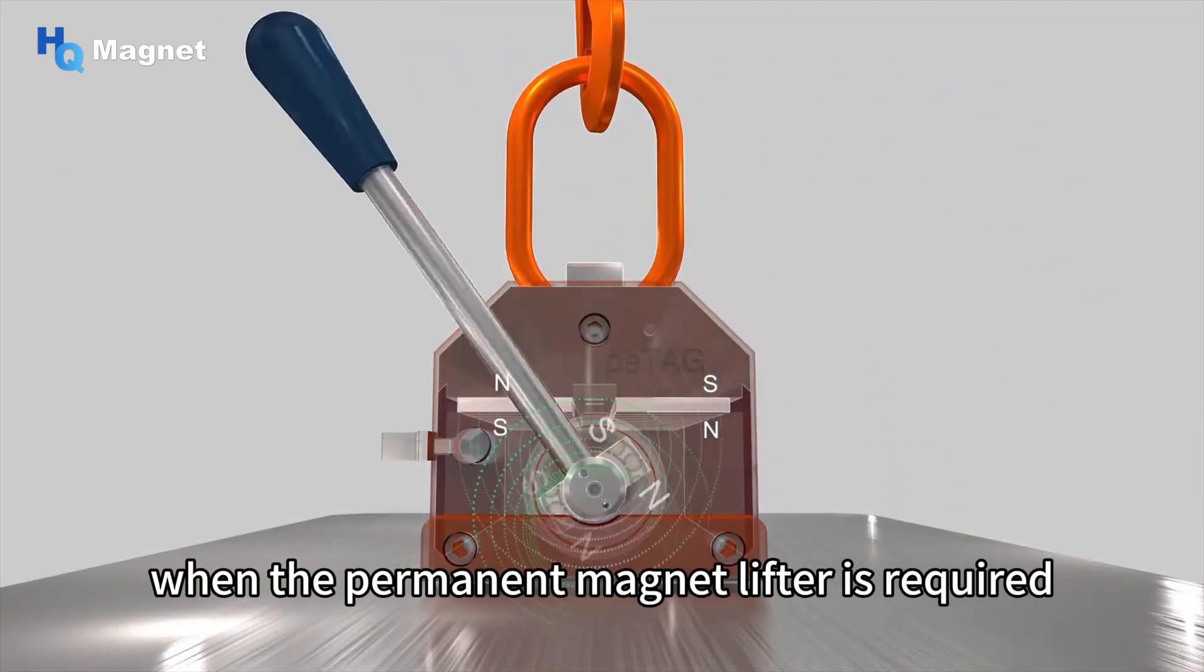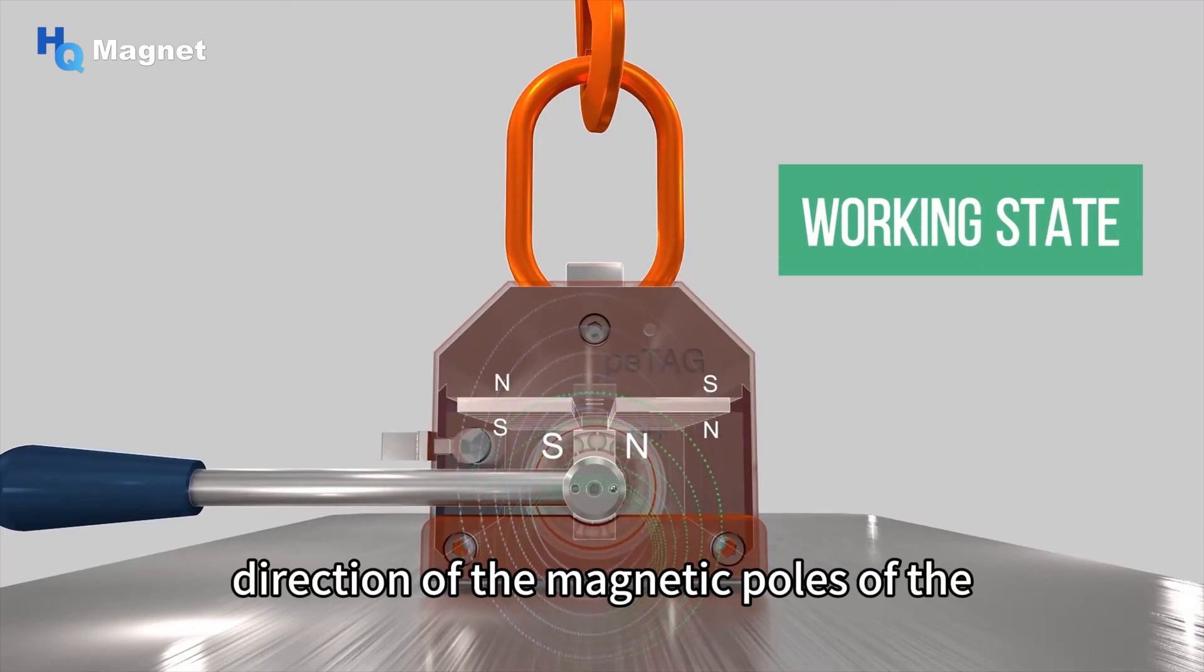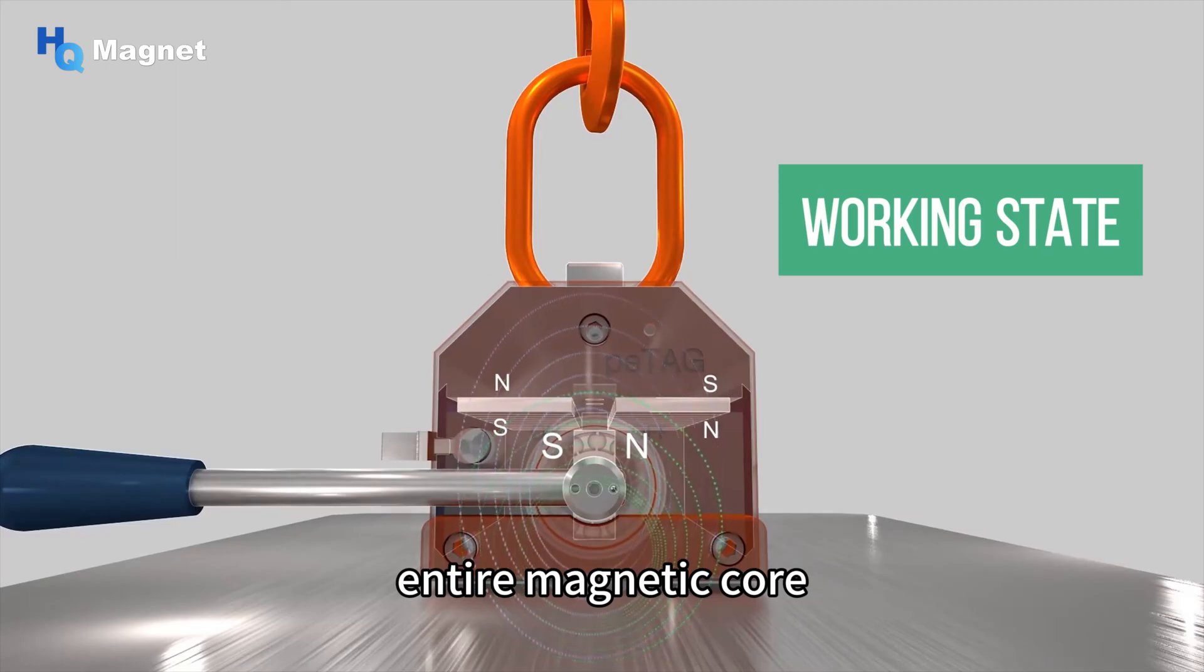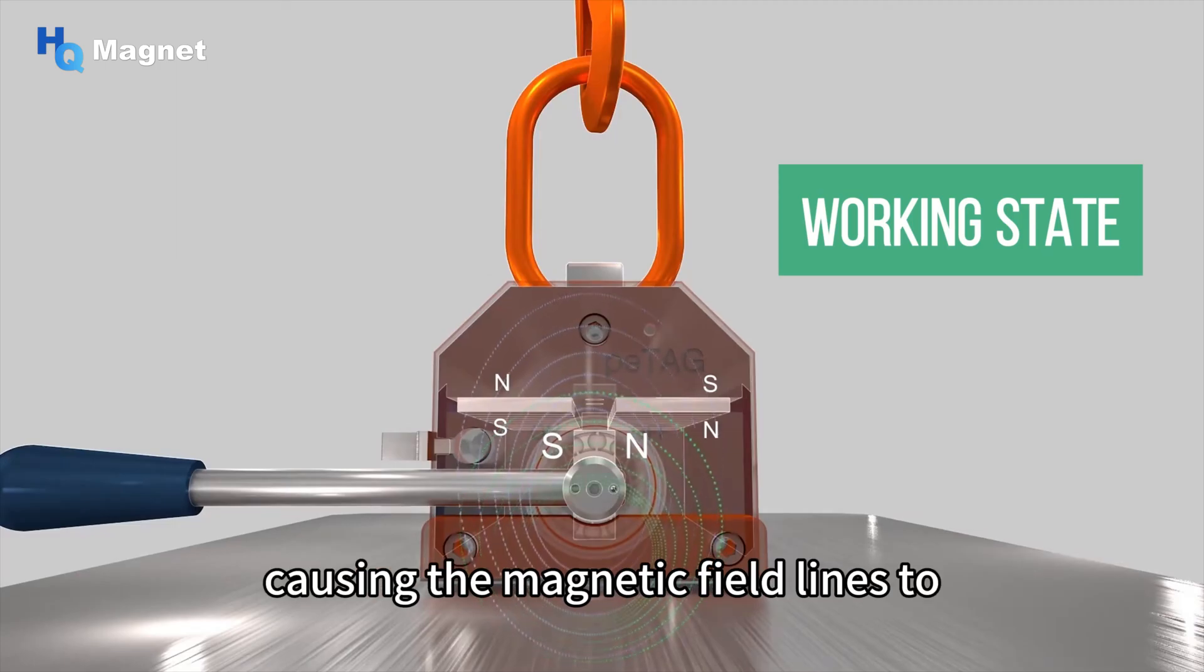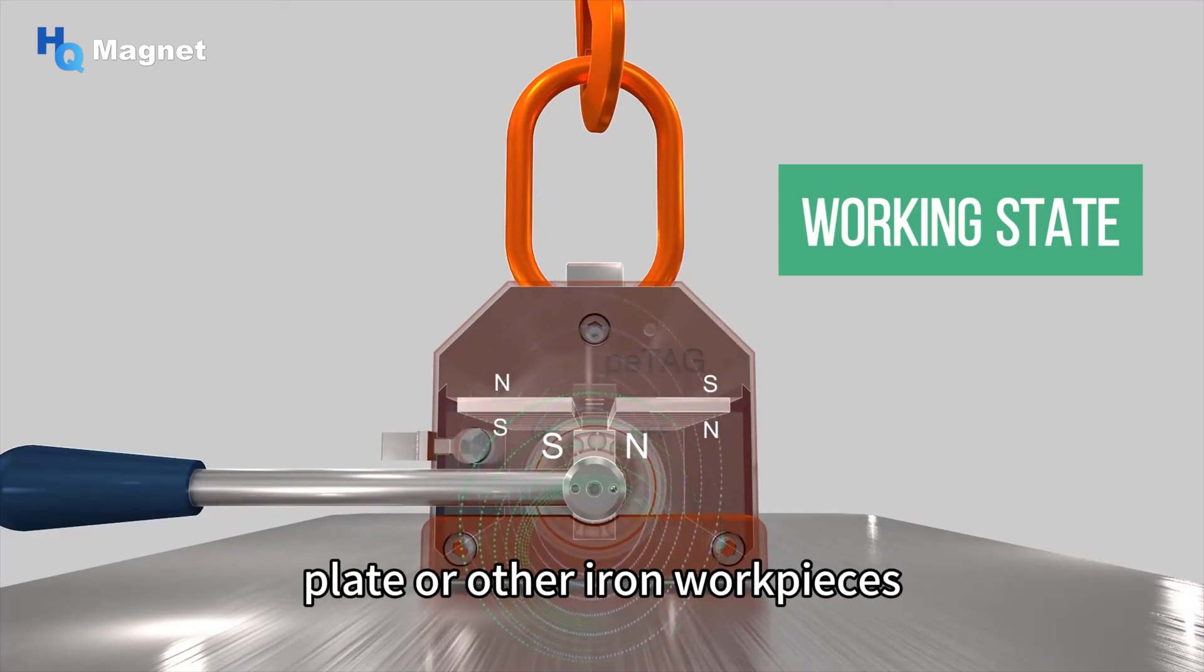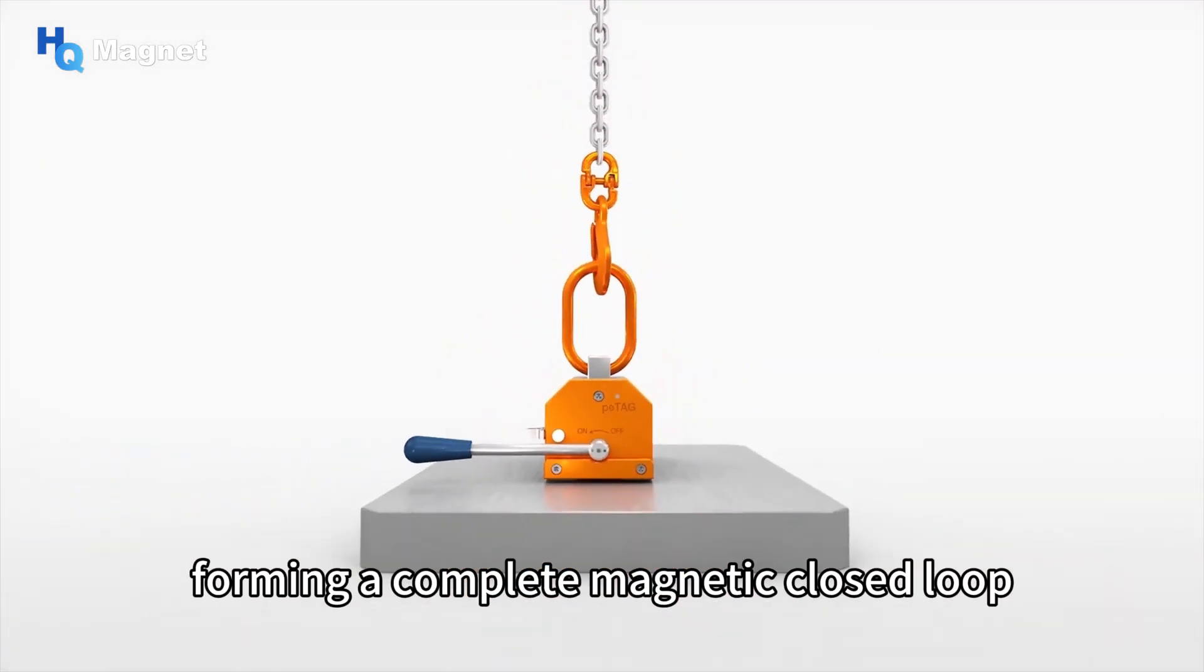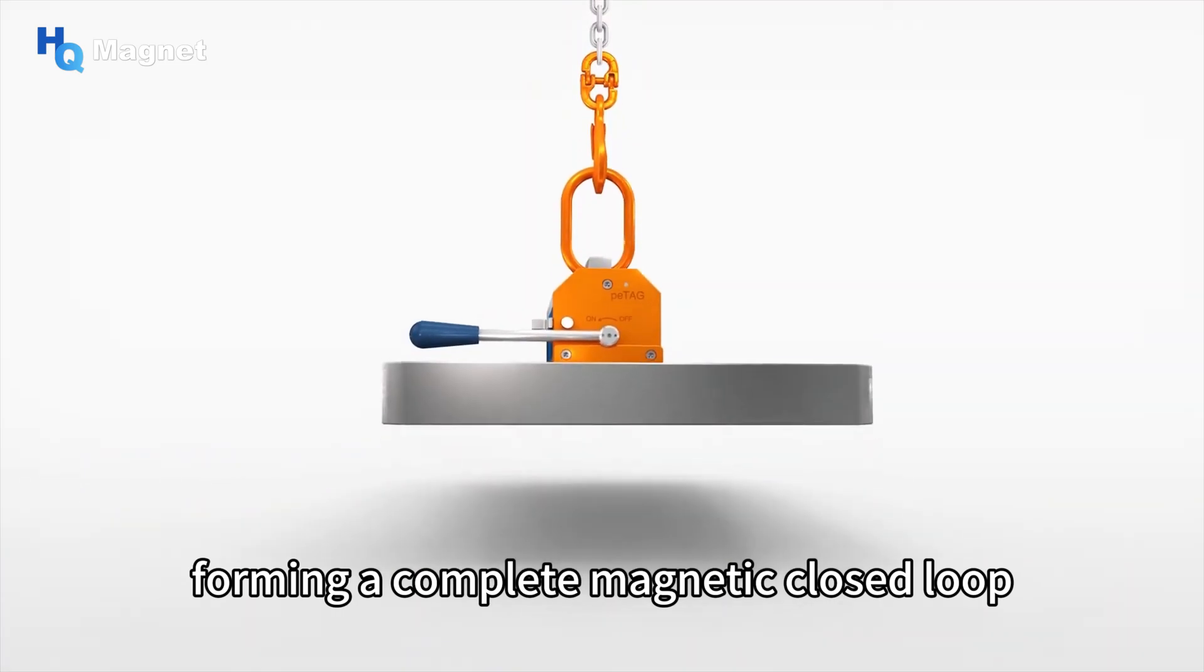When the permanent magnet lifter is required to be in working condition, rotating the handle by 180 degrees changes the direction of the magnetic poles of the entire magnetic core, causing the magnetic field lines to emerge from the end pole of the magnet, pass through the soft magnetic material, and then pass through the iron plate or other iron workpieces, eventually returning to the S-pole of the magnet, forming a complete magnetic closed loop.